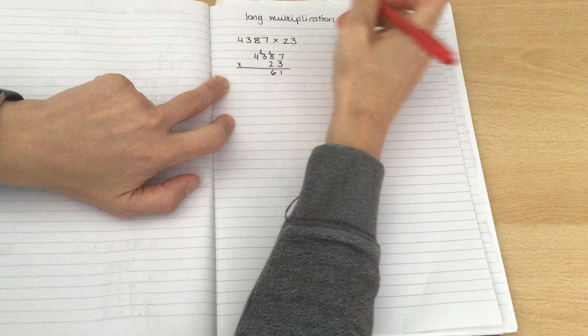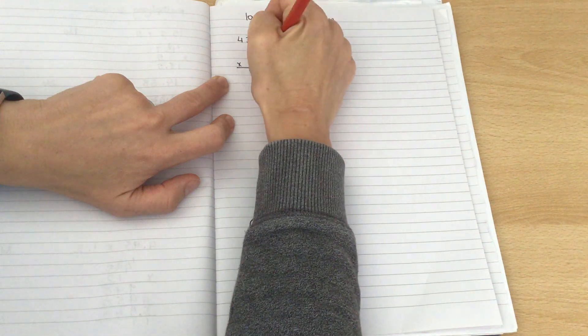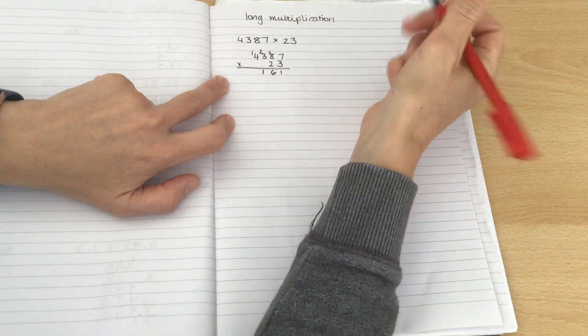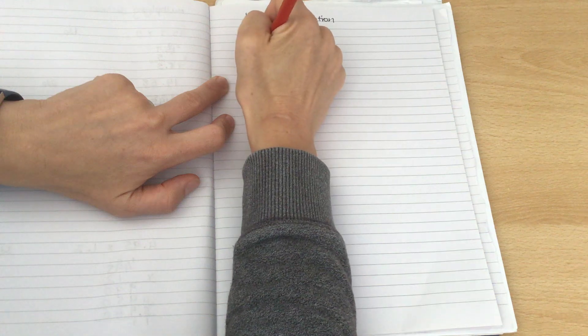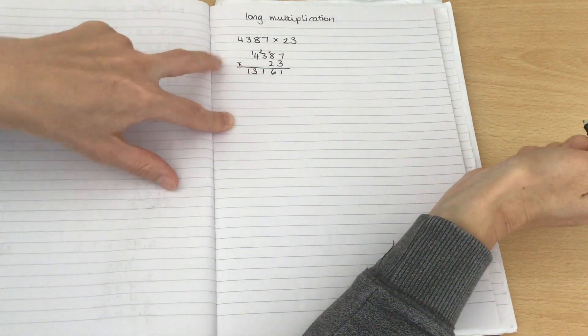3 times 3 is 9. Add the 2, gives me 11. 3 times 4 is 12. Add the 1. We end up with 13 because we've got nothing to carry over to.